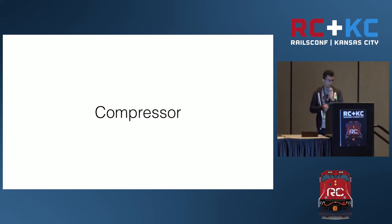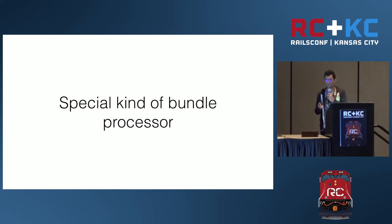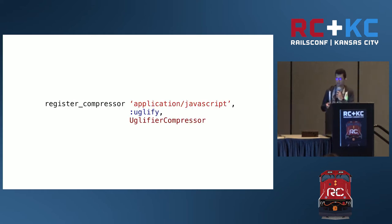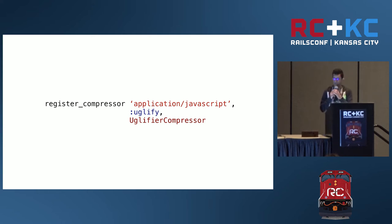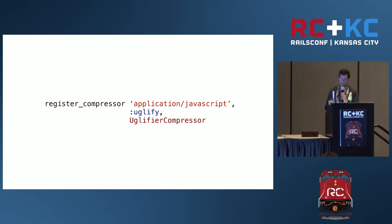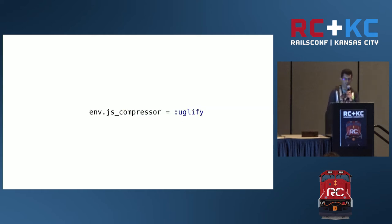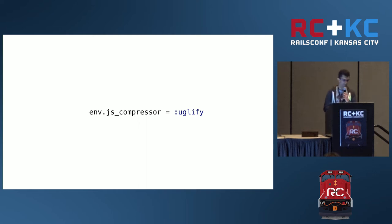We also have compressors. Compressors are a special kind of bundle processor because they run on the concatenated file. You register a compressor with a specific syntax, and the main difference from a bundle processor is that you can only have one compressor per MIME type. It has a special syntax to enable compressors — for instance, you can compress any JavaScript file using this syntax.